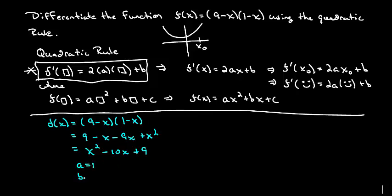So my a value is 1, my b value is negative 10 and although I'm not asked for it, we'll write down the c value of 9.